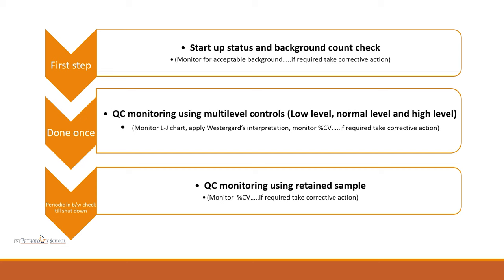Once that is done, we run three multi-level controls: a lower level control, a normal level control, and a high level control. When these samples are run, we monitor them on the LJ chart, apply Westgard interpretation, and monitor the coefficient of variation. If required, we take necessary action. Then QC monitoring continues using retained samples periodically until machine shutdown, and QC monitoring is also done at the end using a retained sample.